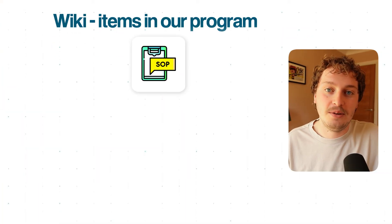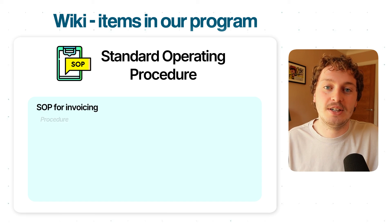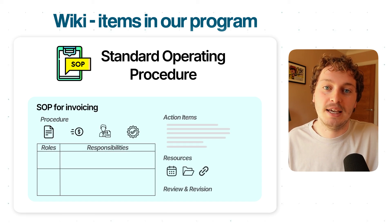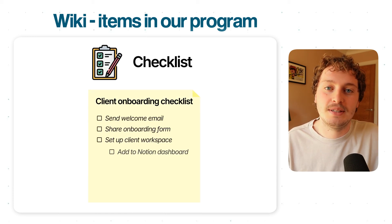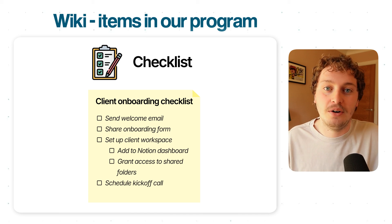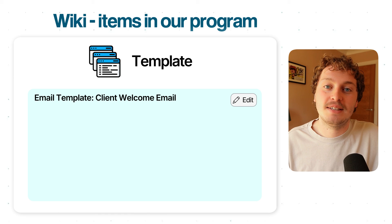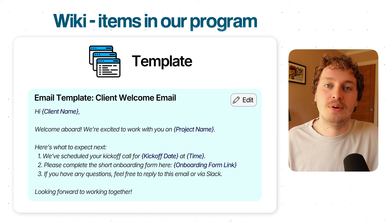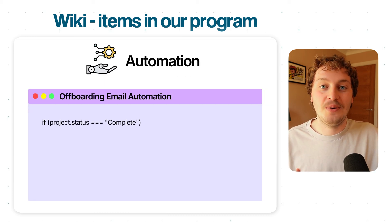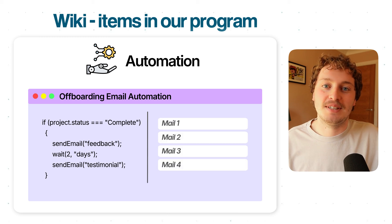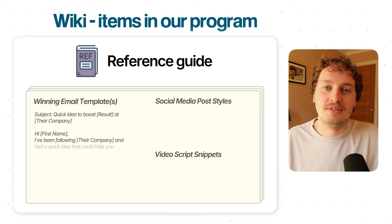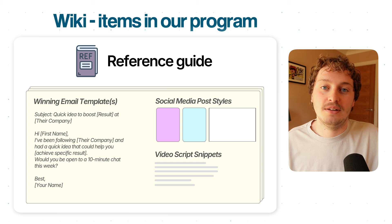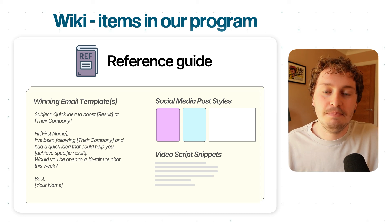Obviously, we have an SOP — standard operating procedure — which is essentially the step-by-step instructions on how to complete a given process. But then we also have things like a checklist, which is a document of all of the steps and sub-steps of a process that a person can check off as they go through. A template, which turns a process into a copy-and-paste format — for example, like an email template for sending the welcome email to a client. An automation, which will automate a manual process and in some cases automate multiple manual processes. A reference guide, which brings together lots of different examples from work that you have done or that others have done that you like to use as inspiration. And many, many more.